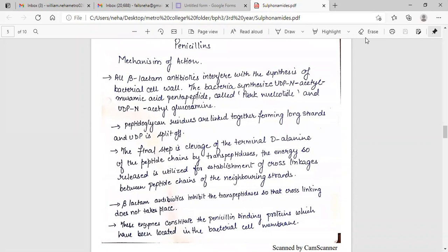The final step is cleavage of the terminal D-alanine of the peptide chain by transpeptidase. The energy source released is utilized for establishment of cross-linkages between peptide chains of the neighboring strand. Beta-lactam antibiotic inhibits the transpeptidase so that cross-linking does not take place. These enzymes constitute the penicillin binding protein which have been located in the bacterial cell membrane.